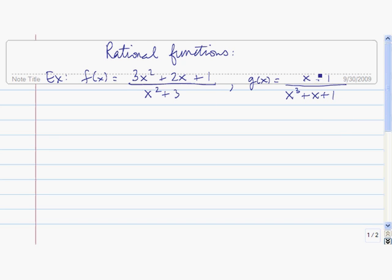Here are two examples of rational functions. You see in each of these, the numerator and the denominator are both polynomials. So in general, a rational function is a fraction where the numerator and denominator are polynomials.